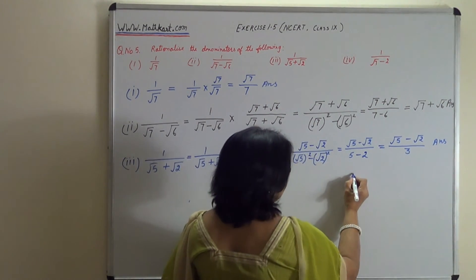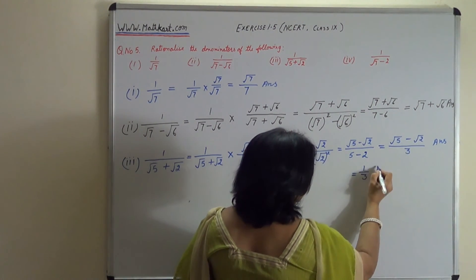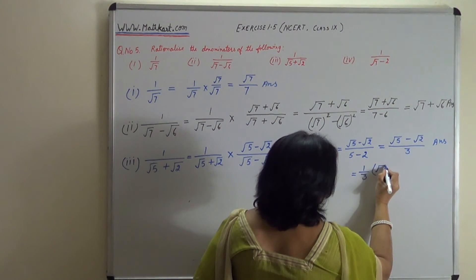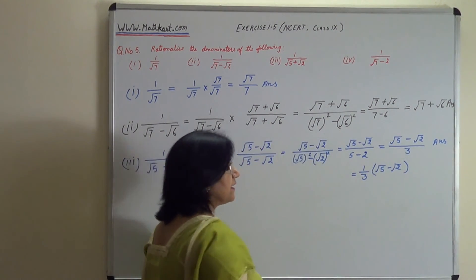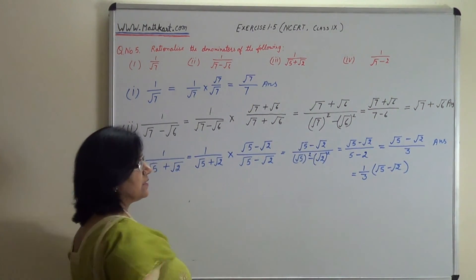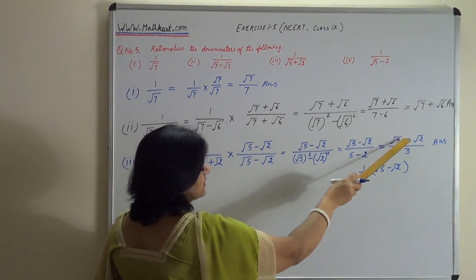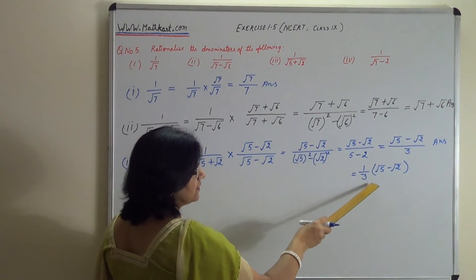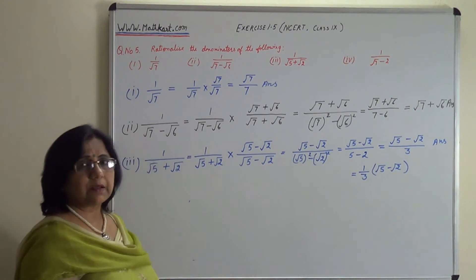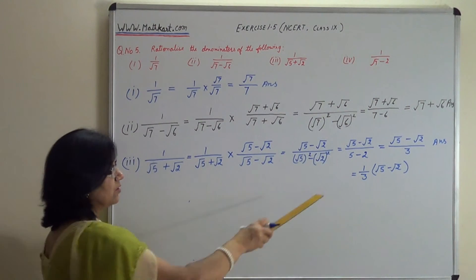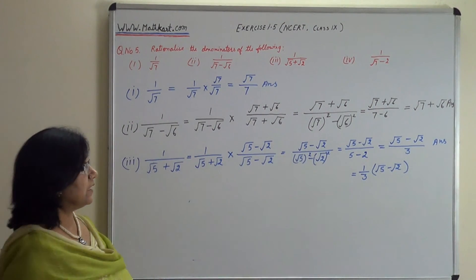आप इसको ऐसे भी लिख सकते हैं: 1 upon 3 into root 5 minus root 2 — दोनों का meaning same है। इसमें 1 common निकाल लिया है, 1 upon 3 बाहर लिखा है और root 5 minus root 2 से multiply किया है। अगर आपके answer में ऐसा लिखा हो तो घबराने की जरूरत नहीं है।